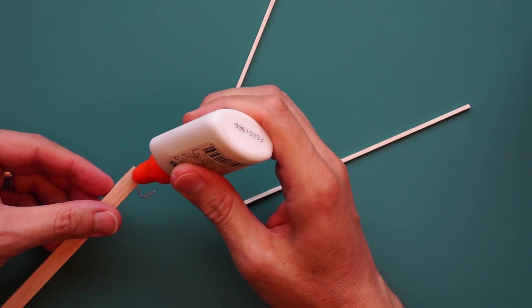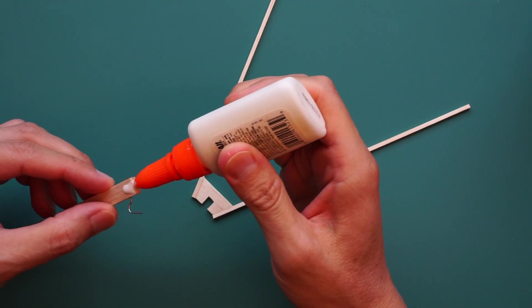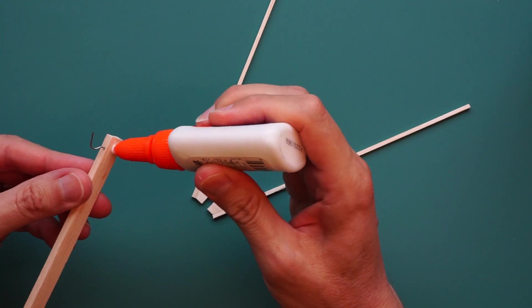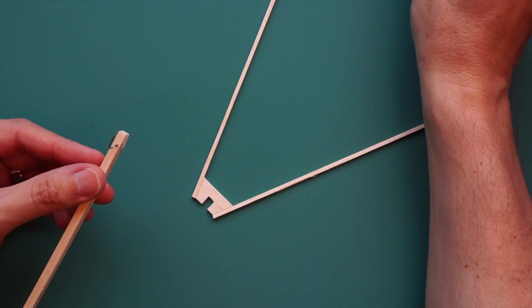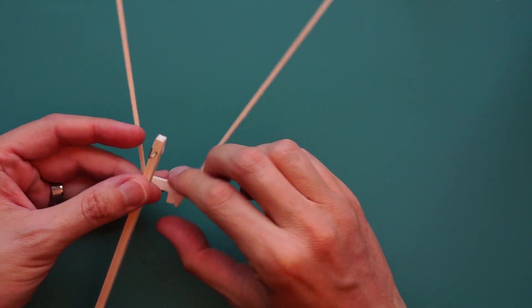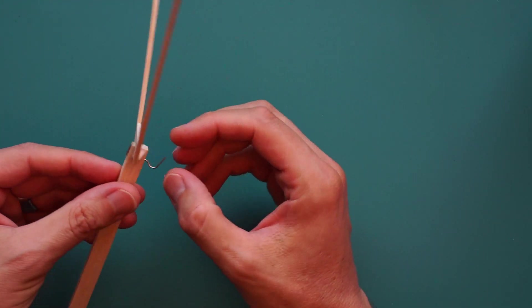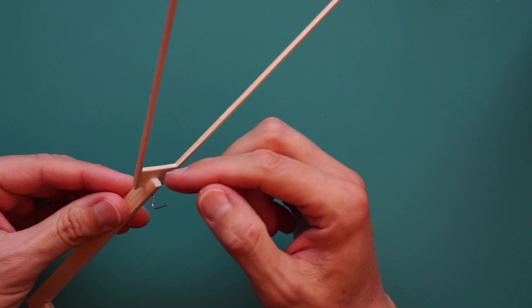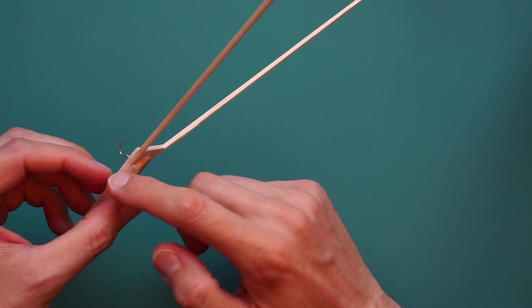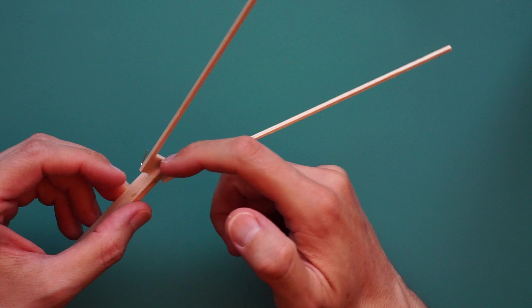I'm going to glue the tail in place. You might be concerned about this, but we will be able to adjust the tail later. I'll show you how to do that at the end of the video. We'll start off with the tail angled up slightly, maybe about 15 degrees.